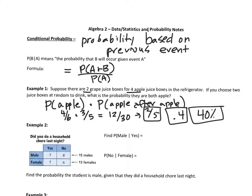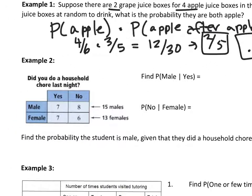We can use the conditional probability formula when looking at probability in charts. Example two: 'Did you do a household chore last night?' There are 15 males (7 + 8) and 13 females (7 + 6), giving 28 total people. Of those, 14 said yes and 14 said no. The notation asks for the probability the person was male given that they said yes — so 'yes' is your denominator: 14 people said yes.